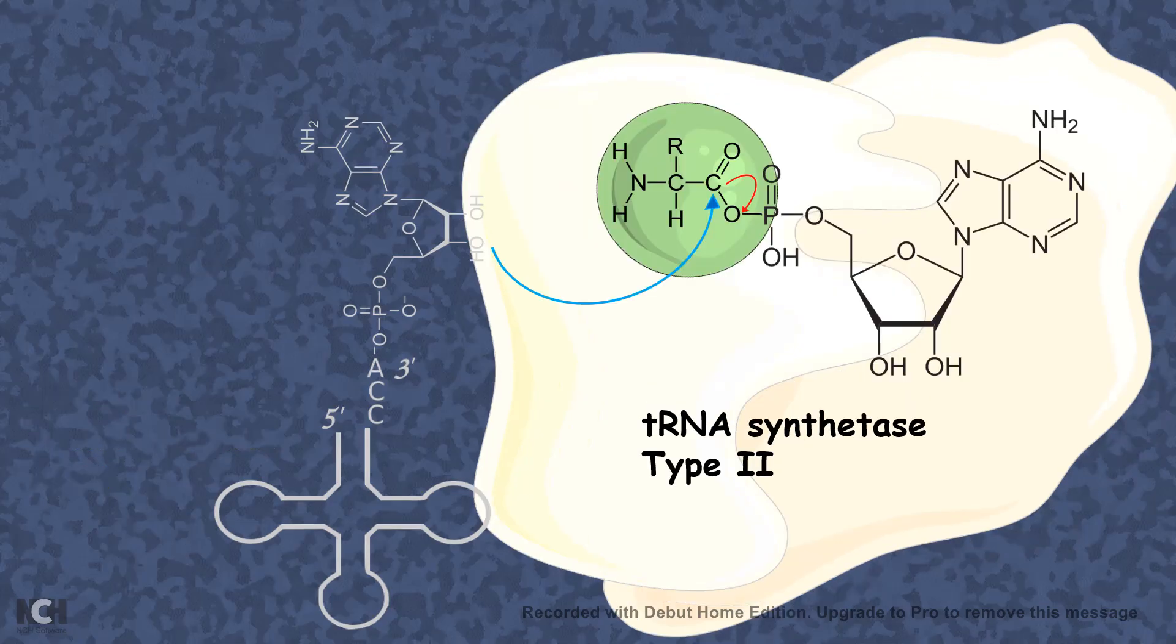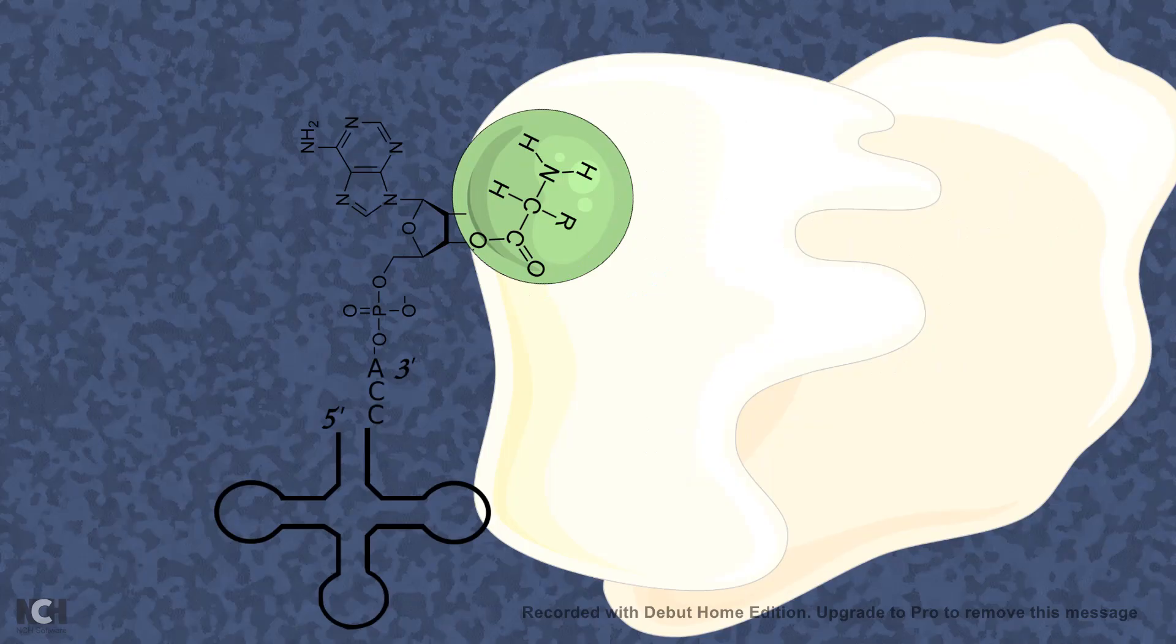Now, many of the cases, the hydroxyl group is not the 2' hydroxyl group rather it's a 3' hydroxyl group. In that case, the tRNA synthetase is known as type 2, while the normal case where there is 2' hydroxyl group as a nucleophile, the tRNA synthetase is known as type 1 tRNA synthetase.